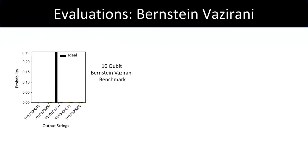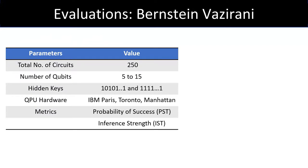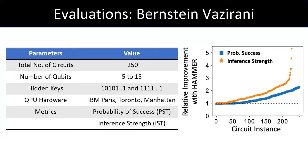To evaluate the effectiveness of HAMMER, we execute benchmarks like Bernstein-Vazarani on quantum computers. Ideally, the circuit outputs the secret string, alternate pattern of ones and zeros, with a probability of one. But on a baseline that runs on an IBM quantum computer, the correct string appears with less than 10% probability. But after applying HAMMER, the probability of correct answer increases, and the erroneous outcomes that were dominant in the baseline output distribution attenuate. We test HAMMER with total 250 different Bernstein-Vazarani benchmark circuits that use 5 to 15 qubits and execute those on three IBM quantum computers. We evaluate relative improvement in success probability and inference strength. HAMMER shows a consistent improvement in both probability of success and inference strength for all the 250 benchmark circuits that we use.